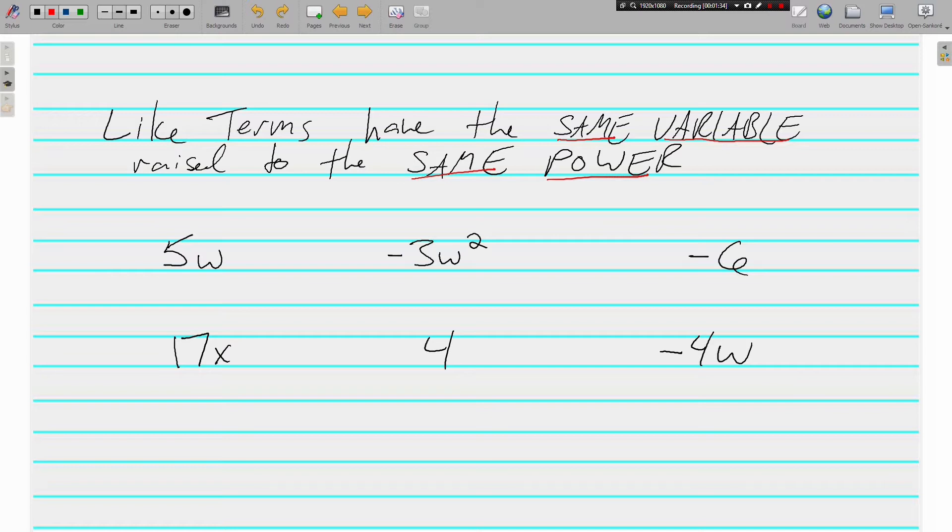So here we've got six different terms, and we just want to make sure we understand which ones are alike. Which ones of these have the same variable raised to the same power? Right here, 5w and negative 4w. Those are like terms because they both have a w, and the w's are to the same power. I know the power is not written there. When it's not written there, it's actually to the first power. So these are like terms.